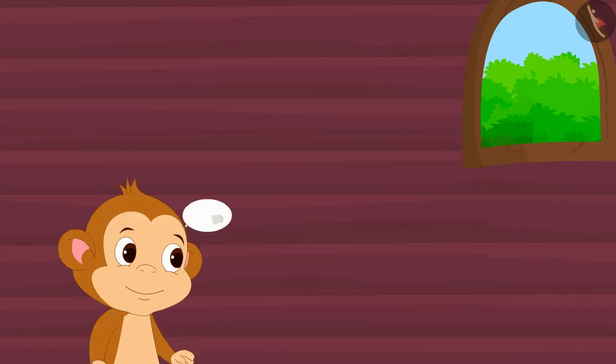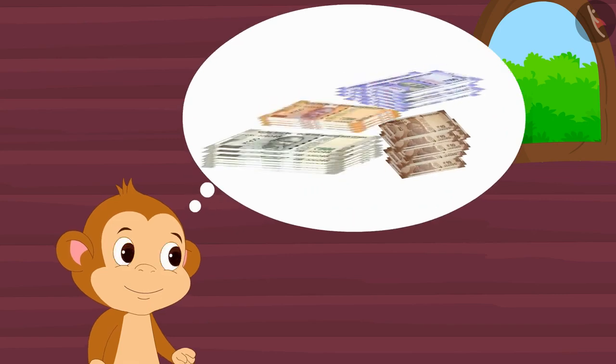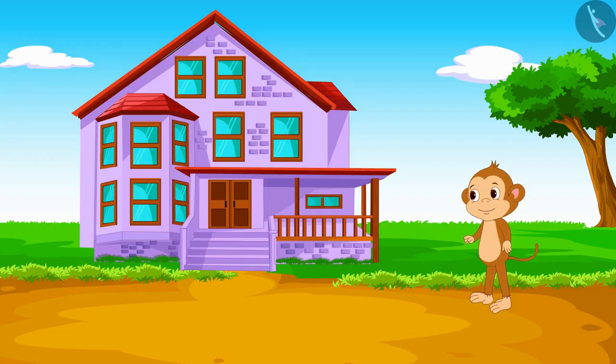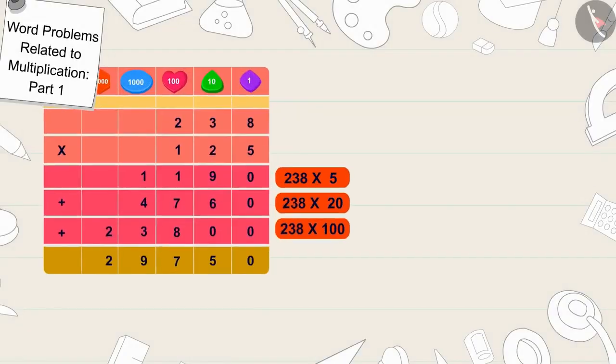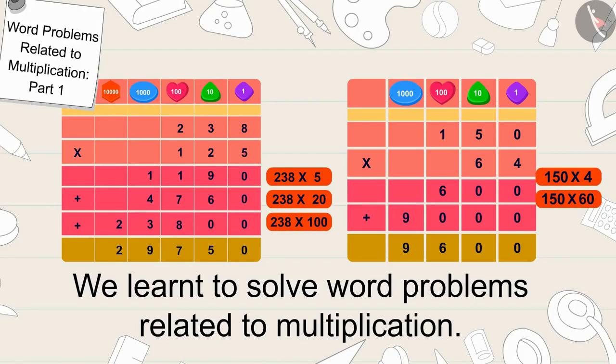Babban made a lot of profit from his shop and after earning a lot of money he bought a new house for himself. Children, in this video we learned to solve word problems related to multiplication. In the next video we will see some more interesting examples of this.